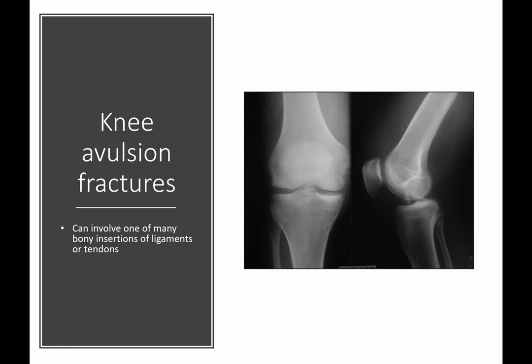Knee avulsion fractures involve the bony insertion of ligaments or tendons around the knee. This one is subtle and hard to see, but there's a small fragment — this is actually an avulsion of the anterior cruciate ligament on the anterior tibia. You can have avulsions elsewhere: the posterior cruciate ligament insertion on the tibia, an avulsion of a portion of the fibular head, or an avulsion from the proximal lateral tibia at the iliotibial band. The key point is it's some type of ligament or tendon pulling a piece of bone off.